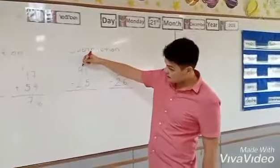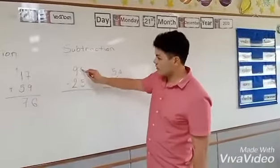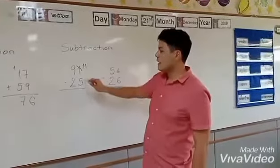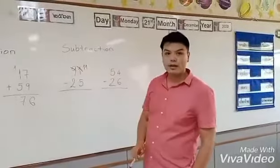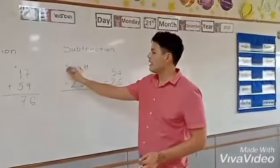So 1 is going to come and say, 'Hey 9, can you help me? Can you give me 1?' And 9 will say, 'Of course, I'll give you 1.' So this 1 will become 11, and this 9 is no longer 9 because you gave 1 to 1. So you became 8.